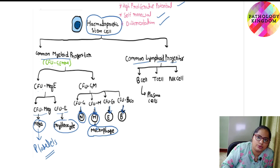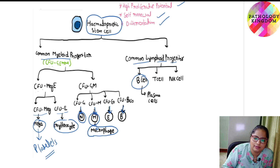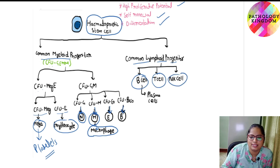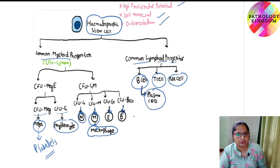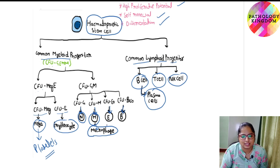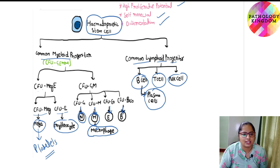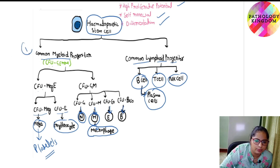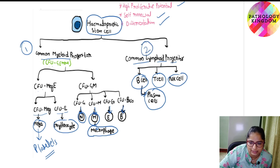The common lymphoid progenitor gives rise to B cells, T cells, and natural killer cells. B cells give rise to plasma cells. This is an overview of how mature blood cells arise from the bone marrow, originating from a common hematopoietic stem cell, which gives rise to the common myeloid progenitor and common lymphoid progenitor.